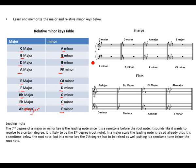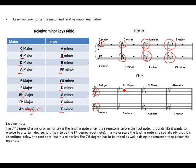Sharps and minor keys share the same accidentals. G major with F sharp shares the same accidental with its relative E minor. D major shares the same accidental with its relative minor A. A major shares the same accidental with F sharp minor. E major shares the same accidental with its relative minor key. For flat keys: F major shares the same key signature with D minor; B flat major is related to G minor; E flat major to C minor; and A flat major to F minor — all sharing the same key signatures.